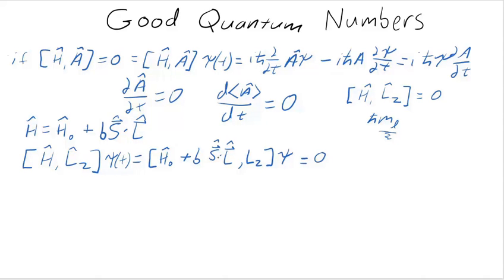Add to that the commutator of b times s dot l with l sub z. I'm not sure yet. We have to find out if that commutator is zero. So let's evaluate it. Don't assume it's zero without convincing yourself. Always a good idea to do that.